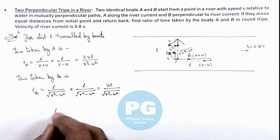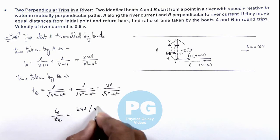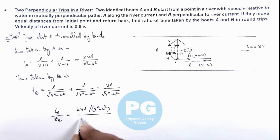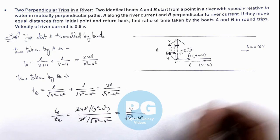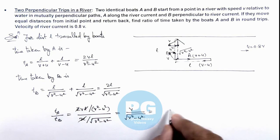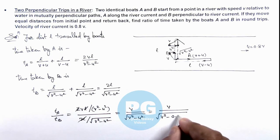So if we calculate the ratio of the two times t_A by t_B, on substituting the values you can see it is 2vl upon (v squared minus u squared). Here 2l gets cancelled out and on simplifying we are getting it as v by root of (v squared minus u squared). If we substitute the value of river current speed, so this will be v divided by root of (v squared minus u is 0.8v), so if we square it this will be 0.64v squared.